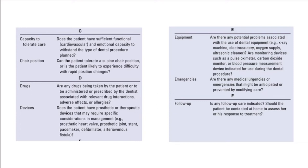Chair positioning — can the patient tolerate a supine chair position, or does the patient experience issues with rapid position changes? Are there any drugs taken by the patient or prescribed by the dentist associated with drug interactions or adverse effects? Any devices — does the patient have prosthetic or therapeutic devices requiring specific management considerations, for example a pacemaker, defibrillator, or AV fistula? Equipment — are there any potential problems with dental equipment, or are monitoring devices like a pulse oximeter, CO2 monitor, or BP measurement device indicated? And finally, emergencies — can any be anticipated or prevented by modifying care? And is any follow-up care indicated?